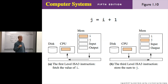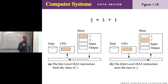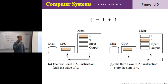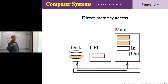We looked at how the statement 'j gets i plus 1' executes. Variables i and j are stored in main memory. To compute them, information flows from main memory over the bus to the CPU, and back. We also saw the phenomenon where the CPU is bypassed — that's called direct memory access — where information flows from the disk over the bus, bypasses the CPU, and goes straight into memory.